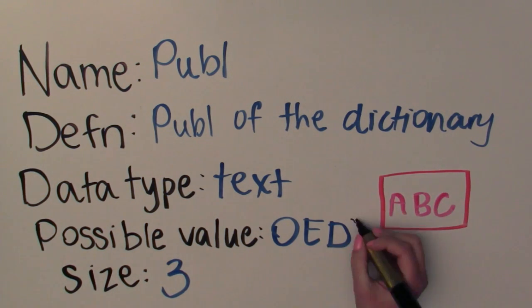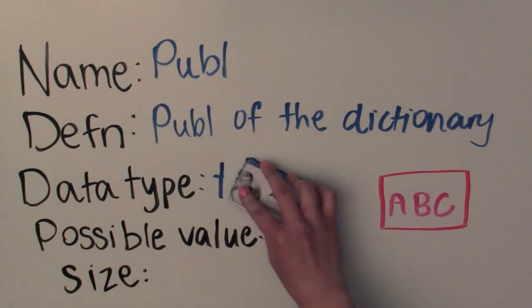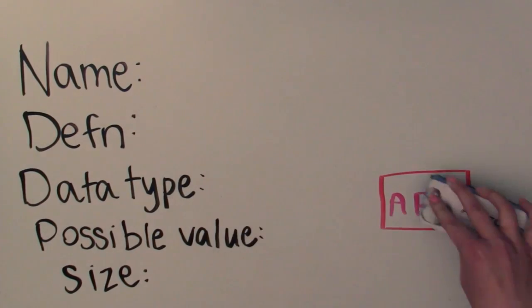Oxford English Dictionary becomes the code OED, but it isn't the only one. And I also have to record the code so it gets interpreted correctly. If you're going to use codes, you need a data dictionary to explain them. The codes are still text, but they now have a special meaning.